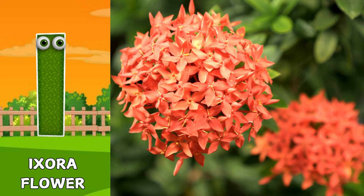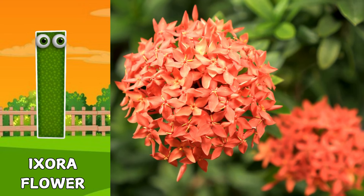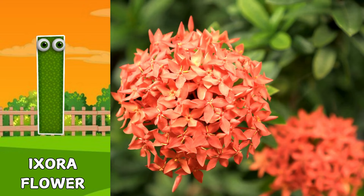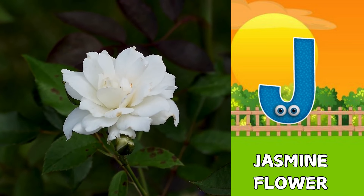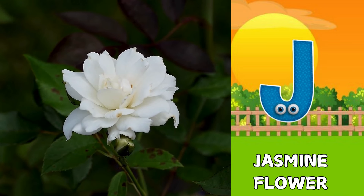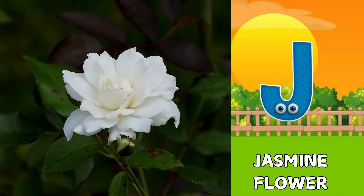I is for ixora flower. Ih. Ixora flower. J is for jasmine flower. Juh. Jasmine flower. K is for kalmia flower. Kuh. Kalmia flower. L is for lotus flower. Lah. Lotus flower.